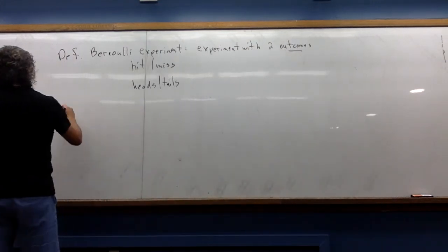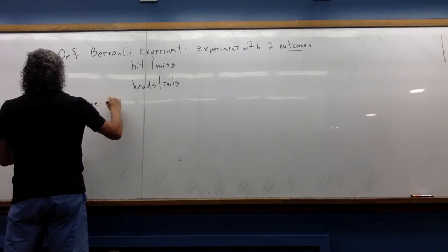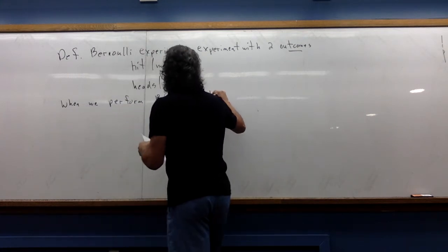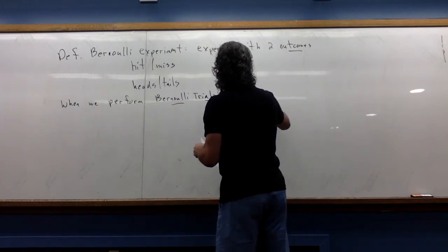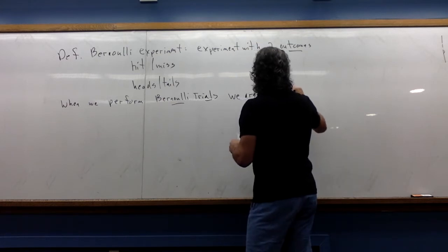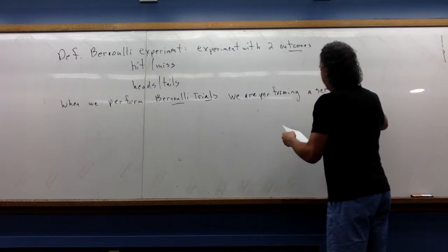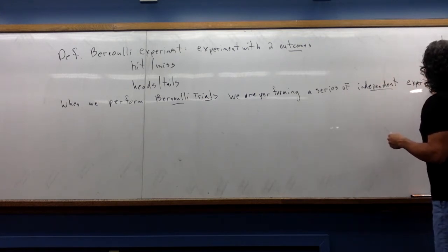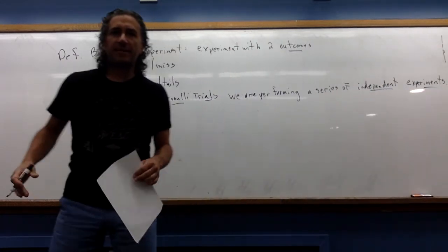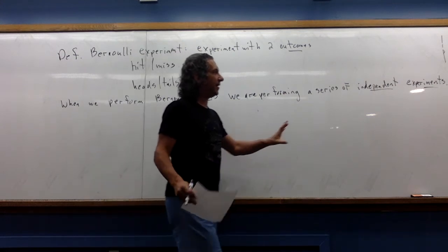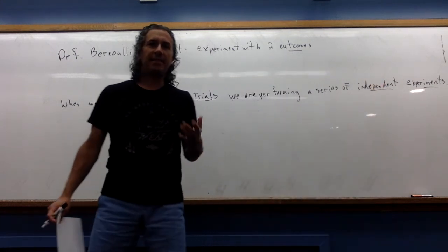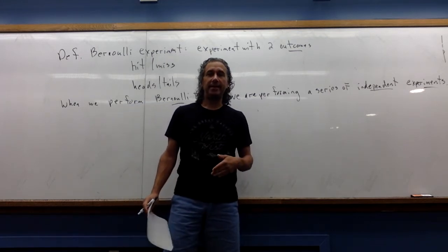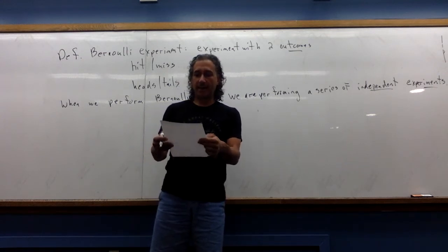Another definition we need: when we perform Bernoulli trials, we are performing a series of independent experiments. We've talked about the idea of independence, and that is going to play an important part in this section. The definition of two independent events is that the probability of A and B equals the probability of A times the probability of B. That's going to come up a little bit later today.